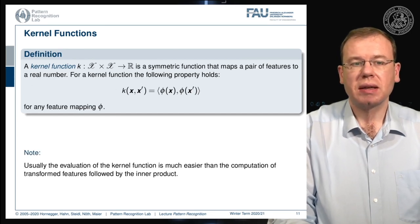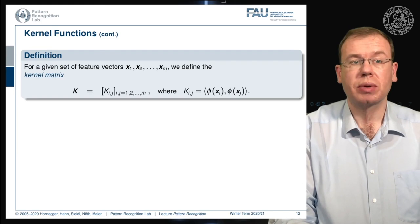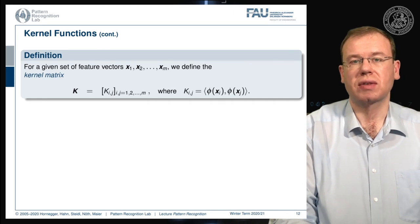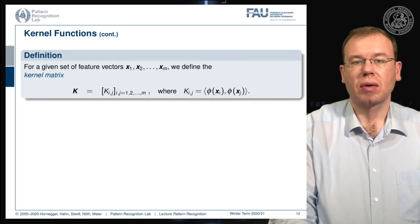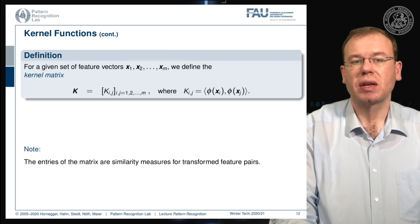This is usually much easier to evaluate because we only need to have the inner products. If we have a finite set of training observations we can of course pre-compute those. If you pre-compute those this gives you the kernel matrix and in the kernel matrix then you have all the elements that are essentially the inner products of the feature transforms. All of these entries are similarity measures of the transformed feature pairs.